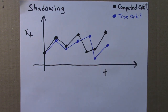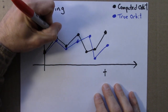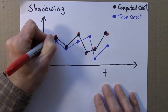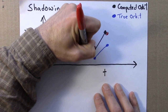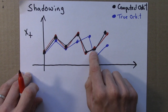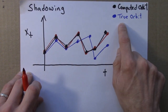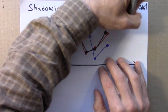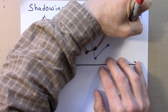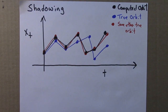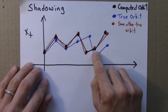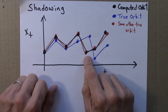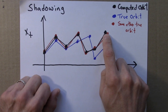The computed orbit is the true orbit for some other initial condition. So the black time series is what we computed, the blue is the true orbit for the original initial condition, and the red is some other true orbit. This black curve is indeed an orbit of the logistic equation — it just happens to not be the true orbit for the initial condition I thought. It's a true orbit for some other initial condition, so I can still interpret this black time series as a trajectory of the logistic equation.